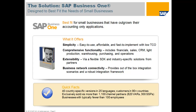SAP Business One is available in 40 country-specific versions in 25 languages, with customers in more than 90 countries. The product is exclusively sold through more than 1,000 partners who work with you, understand your business, and deploy the software to match your business processes. Our partners have extensive experience in these implementations and can give you advice on streamlining your business processes to get even more return on investment.